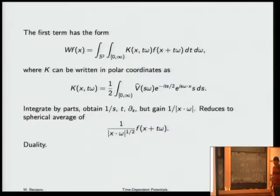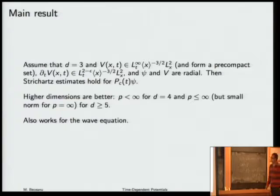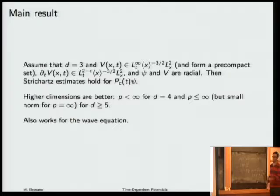I didn't say that the derivative with respect to time of the potential is small because I don't actually require it. As long as I'm dealing with a Lebesgue space which is not L^∞, I can take an arbitrarily large function and cut it up into many smaller functions. Then if we piece together the Strichartz estimates we get on each of those portions, in the end we still get an overall Strichartz estimate. It's going to have an exponential dependence on the size of this time derivative, but that's OK. On the other hand, if we deal with L^∞, then we need small norm because we cannot cut up an L^∞ function into pieces and make it small.